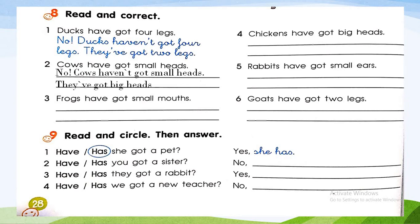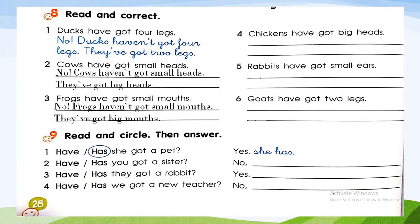Number three: 'Frogs have got small mouths.' No, frogs haven't got small mouths — they have got big mouths. Number four: 'Chickens have got big heads.' No, chickens haven't got big heads — they have got small heads.